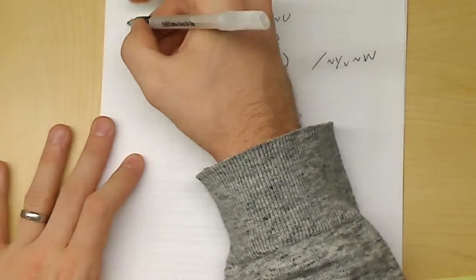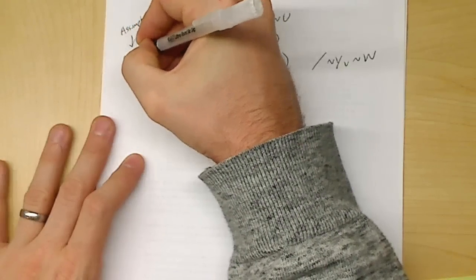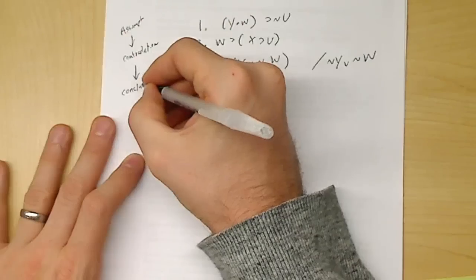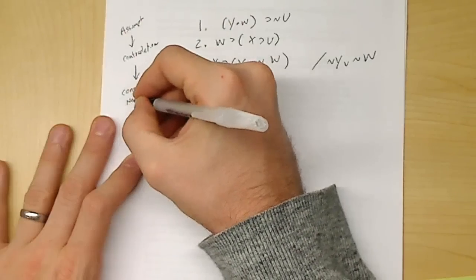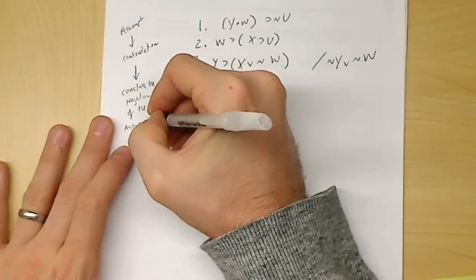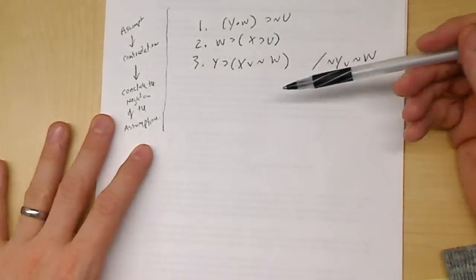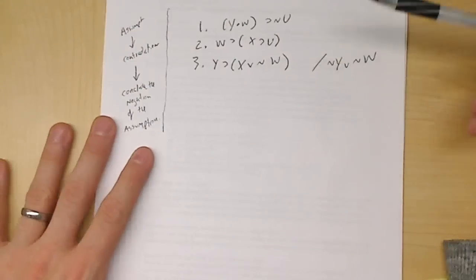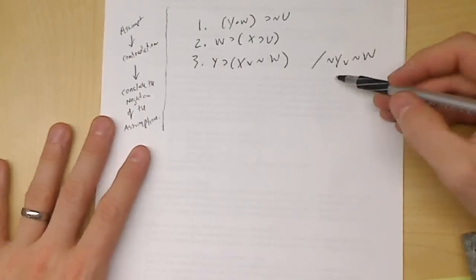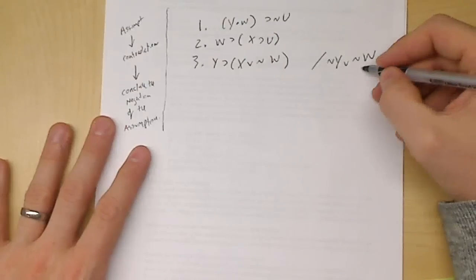Since this is an indirect proof problem, we're going to be using the indirect proof. Remember, the indirect proof works a little bit differently. When we make an assumption, the goal of our assumption is to find a contradiction. And if we can find a contradiction, then we can conclude the negation — or the opposite — of the assumption. This is a very, very powerful tool.